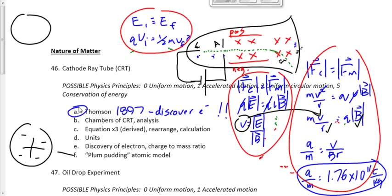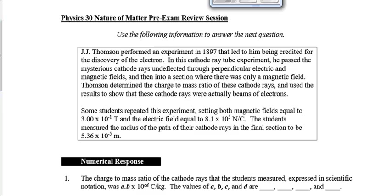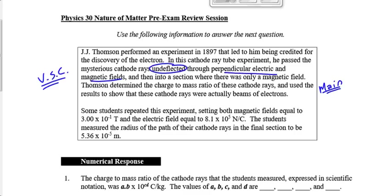Let's take a look at multiple choice question number one. Thomson performed an experiment in 1897 that led to the discovery of the electron. He passed mysterious cathode rays undeflected through electric and magnetic fields — that's going to be the velocity selection chamber, because it's undeflected and involves both electric and magnetic fields. He determined the charge-to-mass ratio — that's the main chamber, where particles go through a magnetic field, travel in a circle, and allow us to find the charge-to-mass ratio.